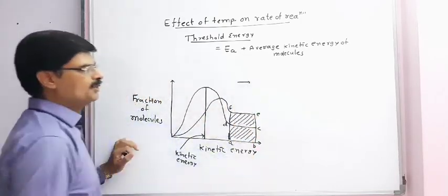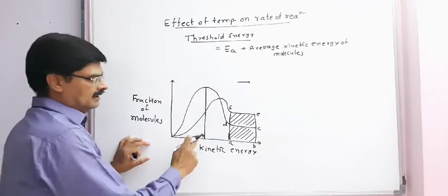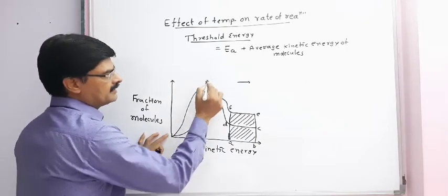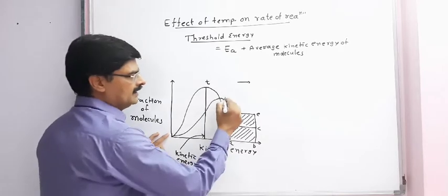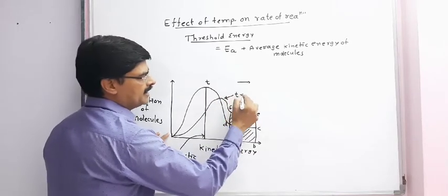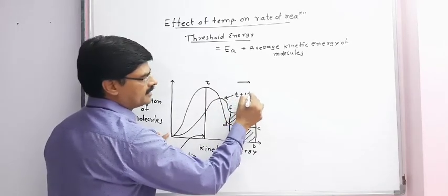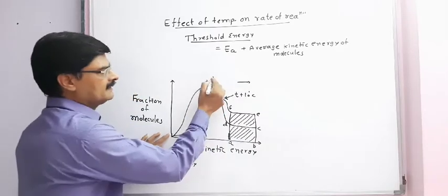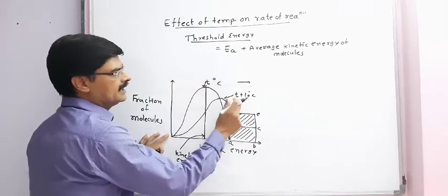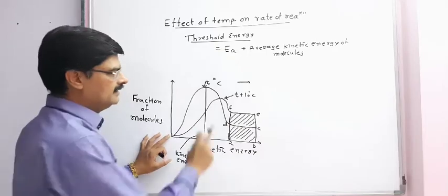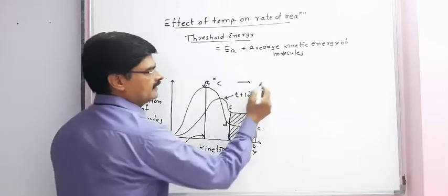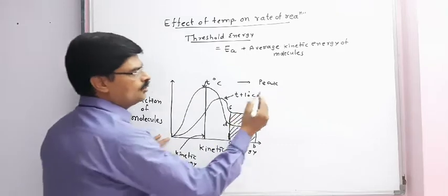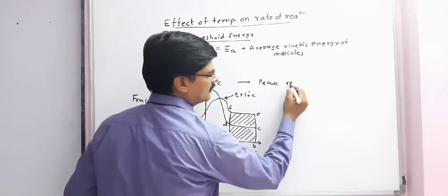From the graph, we can determine that in the first curve temperature is T degree Celsius and in the second peak temperature is T plus 10 degree Celsius. We can see the second peak remains towards the right side.